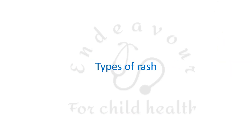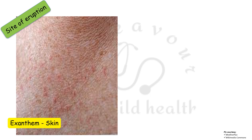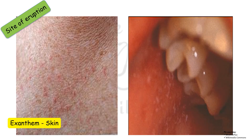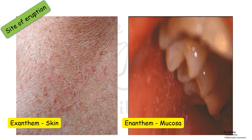Let's first know what the various types of rash are. According to the site of eruption, a rash can be an exanthem if it appears on the skin, or it can be an enanthem if it appears on the mucosa, which is typically seen as a Koplik spot in measles.